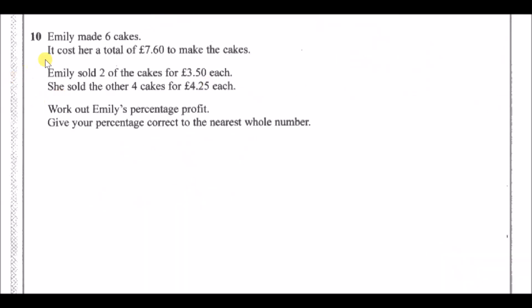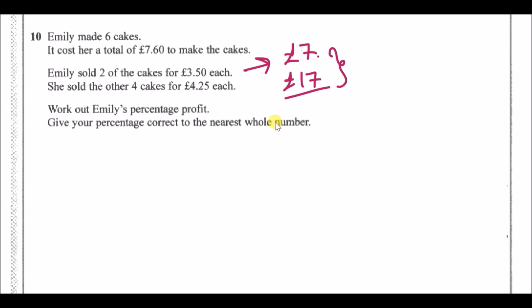Number 10: Emily made six cakes costing a total of £7.60. She sold two cakes at £3.50 each — that's £7. She sold the other four cakes at £4.25 each — four times £4.25 is £17. Altogether she sold them for £24. That's a good return from £7.60.